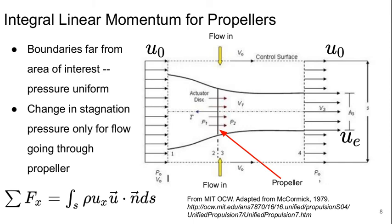So here we're going to think about linear momentum for propellers. So we would set up a control volume. Here's this dashed box represents the control volume and its boundaries are very far away from the area of interest. So that's going to tell us that the static pressure is going to be uniform and equal to the free stream value on the entire external surface of this control volume. And we'll assume that there's only a change in stagnation pressure for the flow that just goes through the propeller, which is the streamlines that are bounded by these black lines. This is the capture stream tube of the propeller. This line here is the propeller.